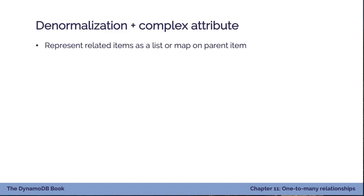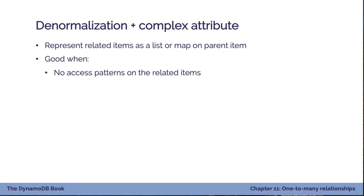To summarize this strategy: you represent related items as a list or map on the parent item. This is good when two conditions are true. First, you don't have access patterns on the related items directly outside the context of the parent — for example, you don't need to look up a user by their address alone. Second, you have a limited number of related items, due to DynamoDB's 400 kilobyte item limit. If you had an unbounded number of related items, you could overflow that limit.